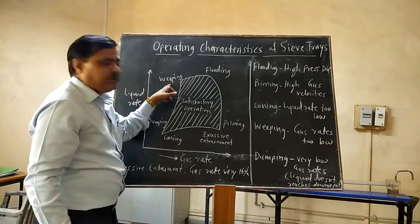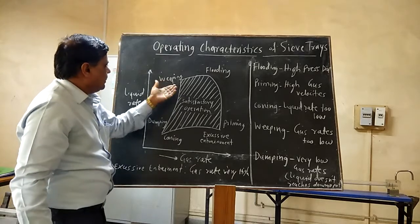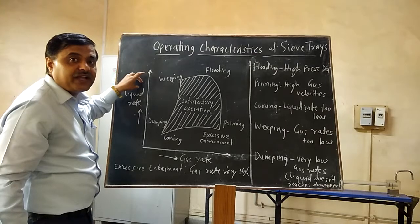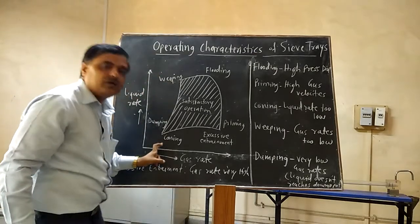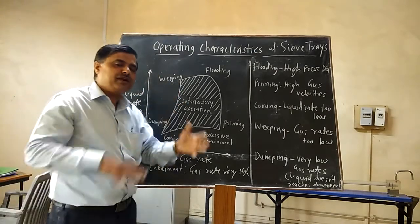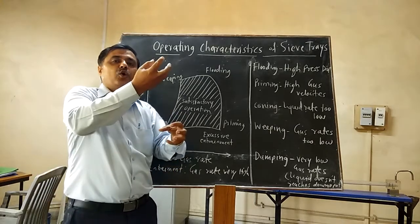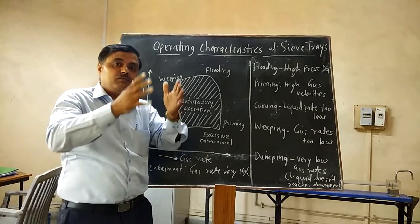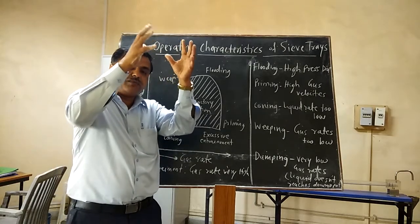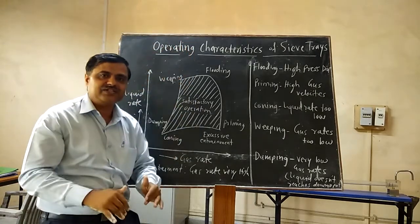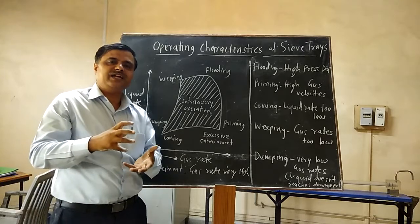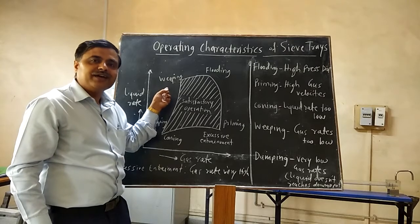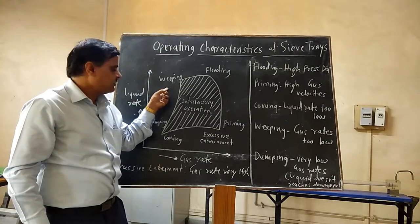Next is the weeping condition. The liquid rate is very high and the gas rate is low. What happens in the column is that if the gas rate is very low and liquid rate is very high, whatever liquid enters from the top falls down as-is and the contact of gas and liquid is very poor. That unsatisfactory condition is called weeping.